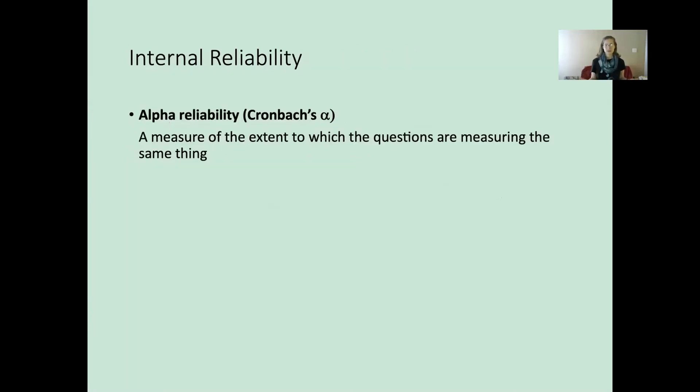We have ways of measuring internal reliability. Now, it is mathematical, but don't freak out. You're not going to have to calculate Cronbach's Alpha in this class. Cronbach's Alpha is a measure of the extent to which the questions in the same questionnaire are measuring the same thing. It's a measure of internal reliability or internal consistency.